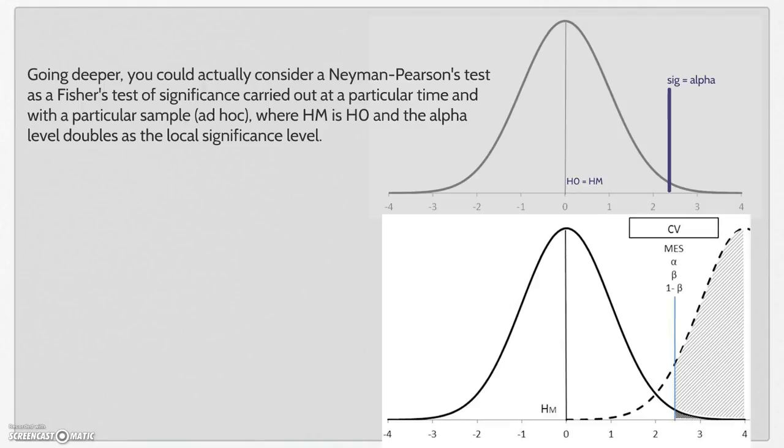Now, going deeper, we could actually consider a Neiman-Pearson's test as a Fisher's test of significance carried out at a particular time and with a particular sample, where the main hypothesis is the null hypothesis and the alpha level doubles at the local significance level.